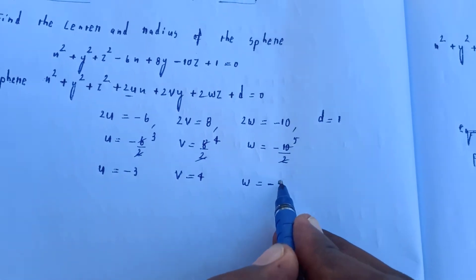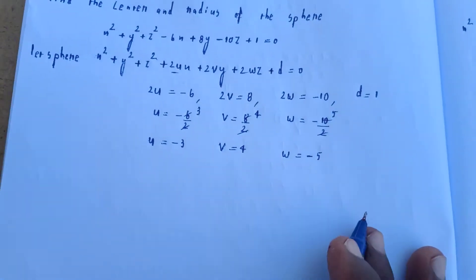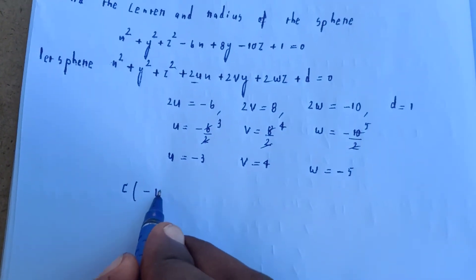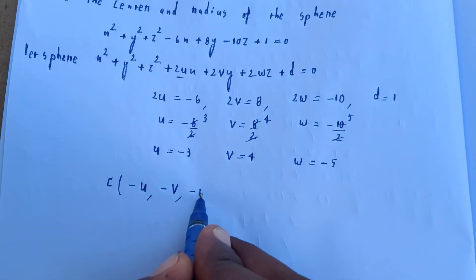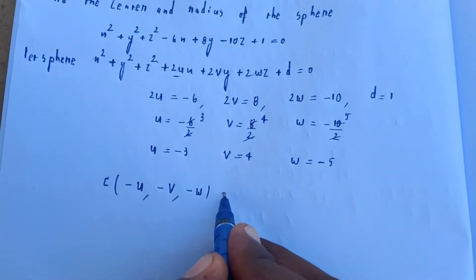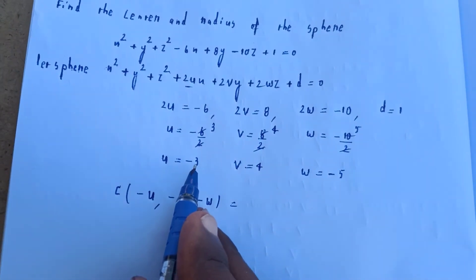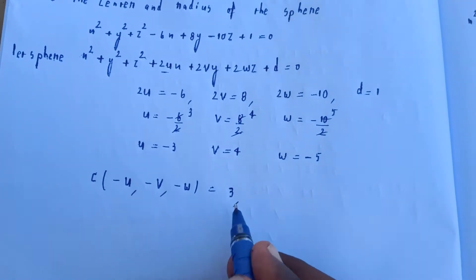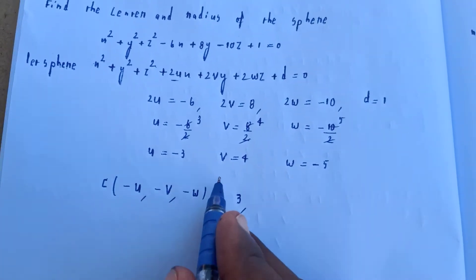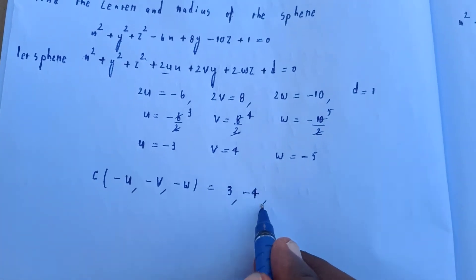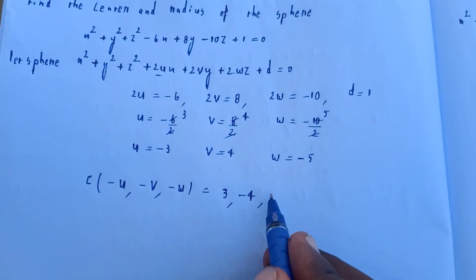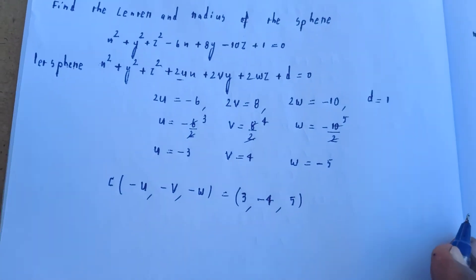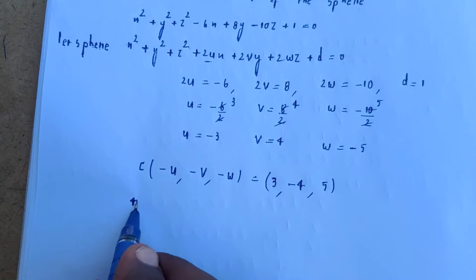The center formula is (minus u, minus v, minus w). So center equals (minus of minus 3, minus of 4, minus of minus 5) which gives center as (3, minus 4, 5).